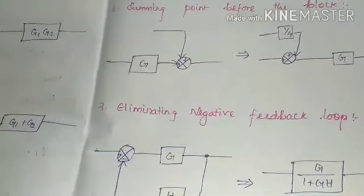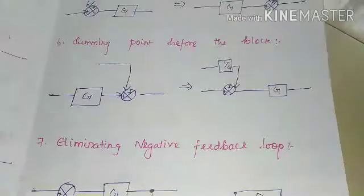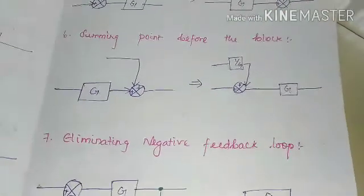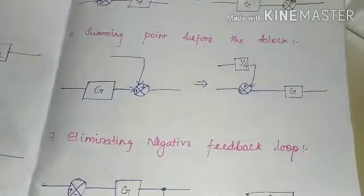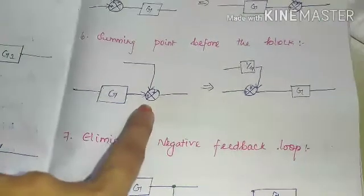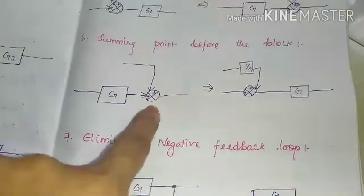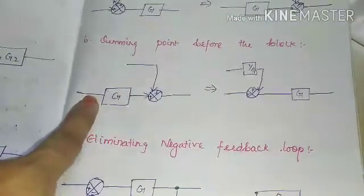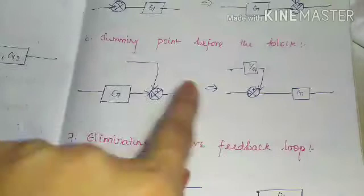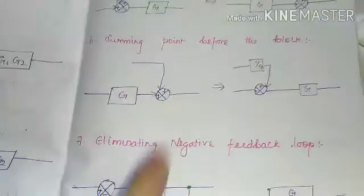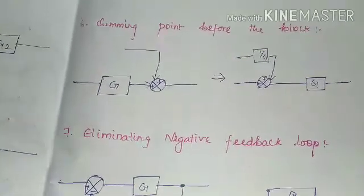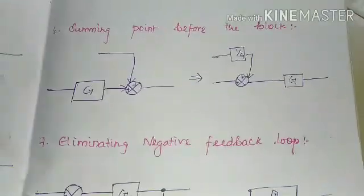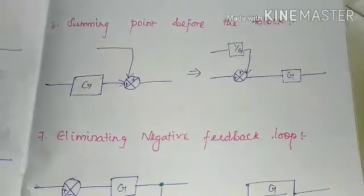Rule number 6: if you are going to shift the summing point before the block — where the summing point is currently after the block — you have to divide that block's gain.